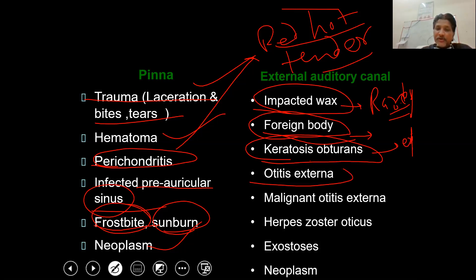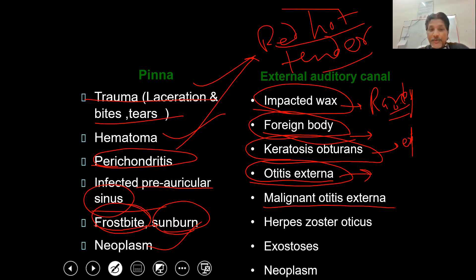A very important cause of canal pain is otitis externa — the inflammatory sequence of the external ear, involving the canal plus pinna. Next is malignant otitis externa, which is a grave picture reserved for immunocompromised and poorly controlled diabetic patients. There is a huge inflammatory sequence, loss of tissue, and bleeding in the canal.